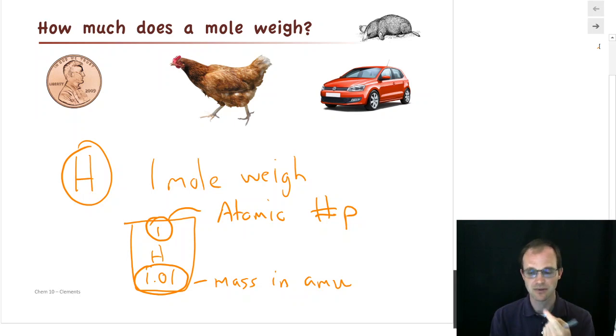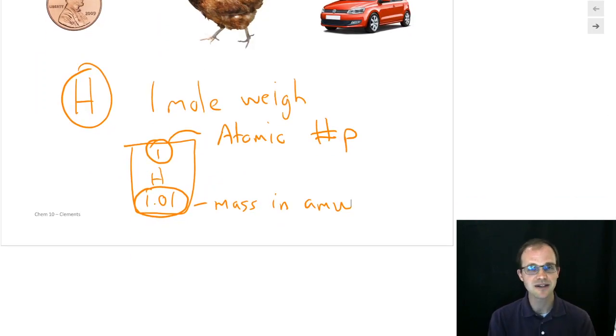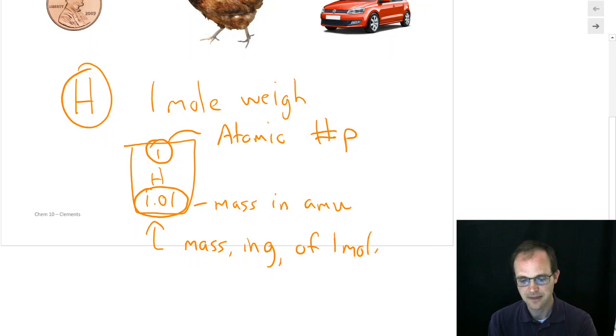Well, how about if we had one mole of them, what would it weigh? If we had one mole of them, it would weigh 1.01 AMU times 6 times 10 to the 23rd. It would be a fairly large number. But it turns out it's even simpler than that. This 1.01 is not only the mass in AMU, it is the mass in grams of one mole of hydrogen.